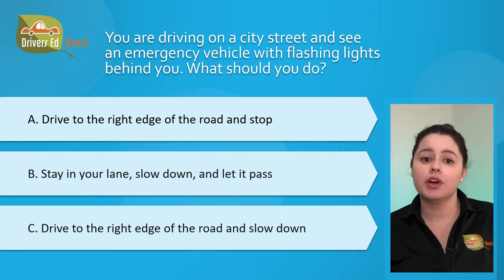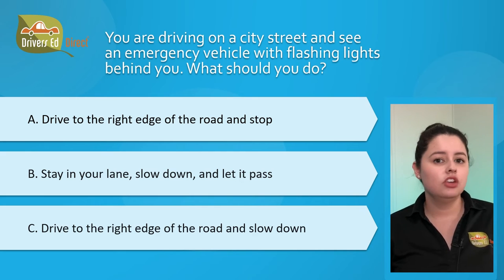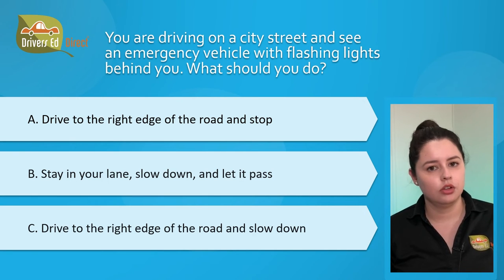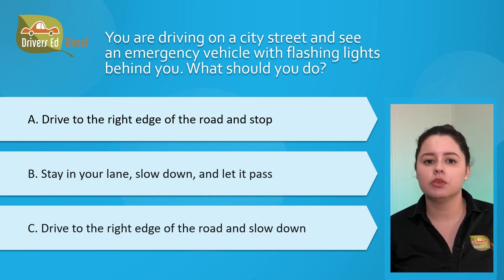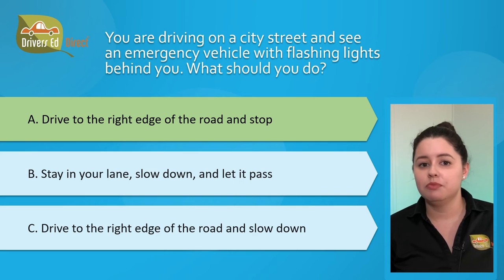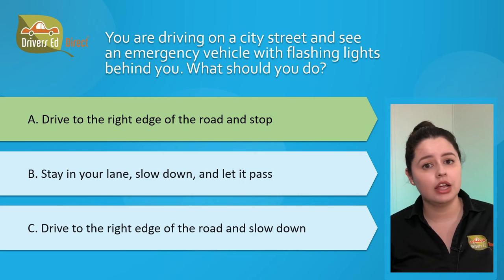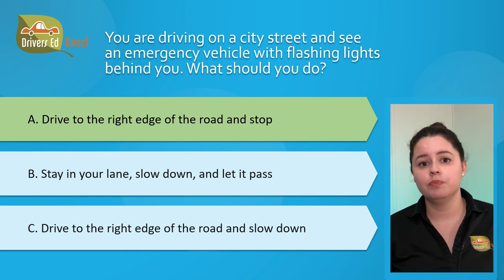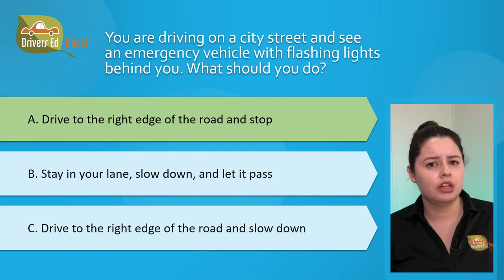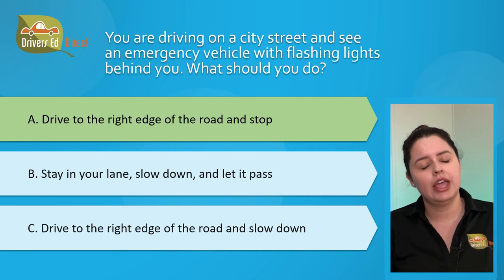Question number fifteen: you are driving on a city street and see an emergency vehicle with flashing lights behind you. What should you do? A) drive to the right edge of the road and stop, B) stay in your lane, slow down, and let it pass, or C) drive to the right edge and slow down. The correct answer is A, drive to the right edge of the road and stop. Yield to any police car, fire engine, ambulance, or emergency vehicle using sirens and lights. If you're in an intersection, continue through it, then pull to the right and stop.